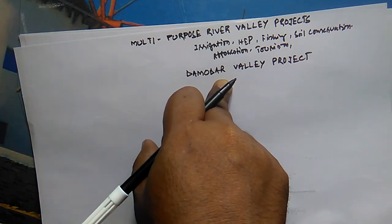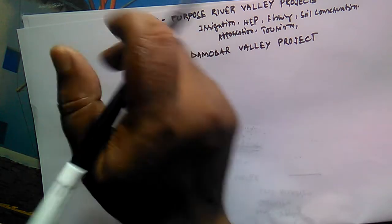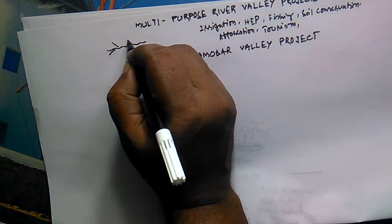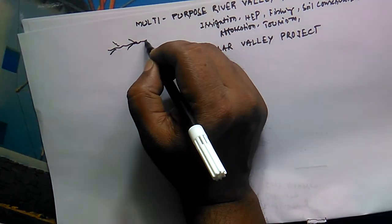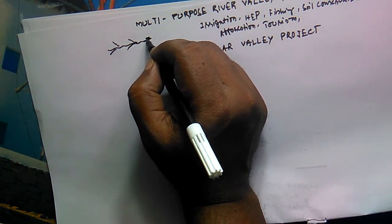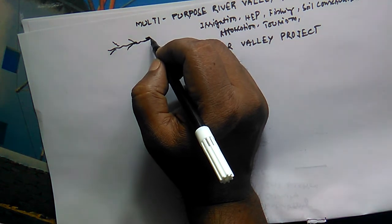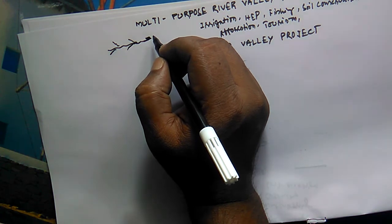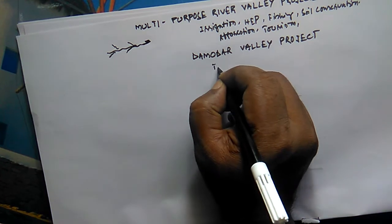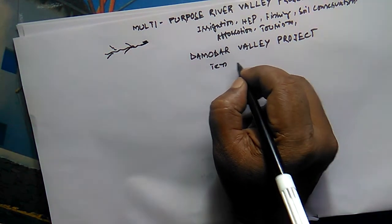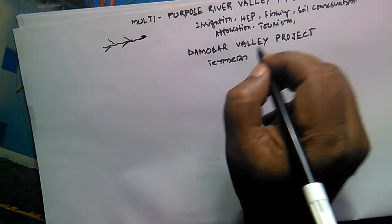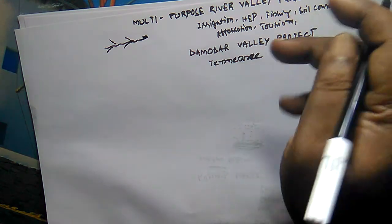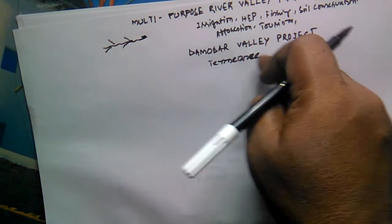The river Damodar in the past was often referred to as the 'river of sorrow.' During the rainy season, its tributaries used to bring plenty of water into the main river, causing frequent floods in its lower course in Bengal. This project was envisaged taking inspiration from the Tennessee River Valley Project located in the USA, which similarly had tributaries bringing in large volumes of water.